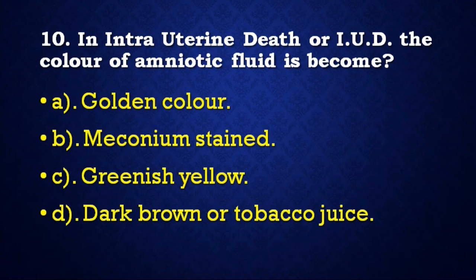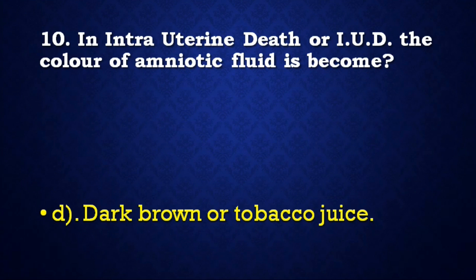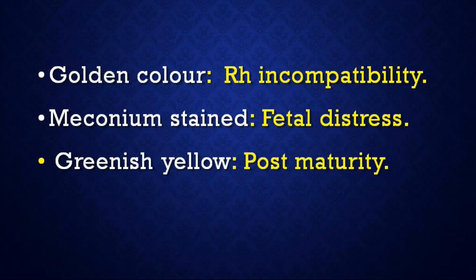Next question: In intrauterine death (IUD), the color of amniotic fluid becomes — golden color, meconium-stained, greenish yellow, or dark brown turbid? Correct answer is dark brown turbid. Golden color is seen in Rh incompatibility; meconium-stained amniotic fluid is seen in fetal distress; and greenish yellow amniotic fluid is seen in post-maturity babies.